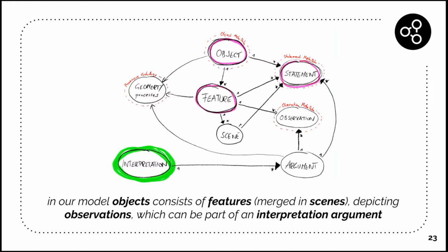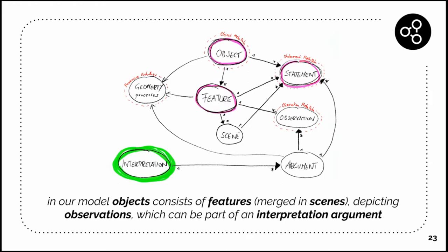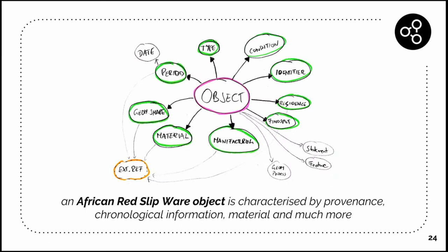The first idea of how the ontology will look like: in our model objects are consisting of different features which are merged in scenes, and these are depicting some observations which can be in the end some part of an interpretation argument. That's the whole process what we want to model in the ontology.